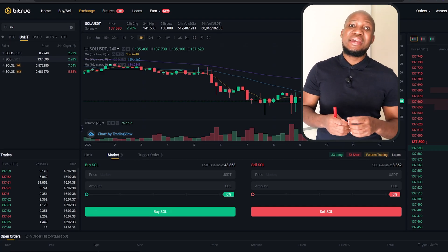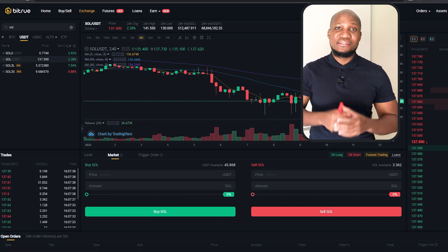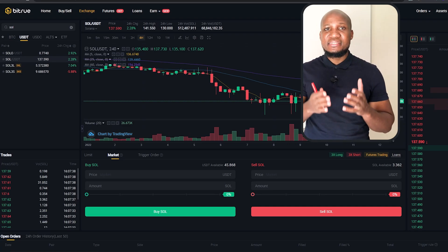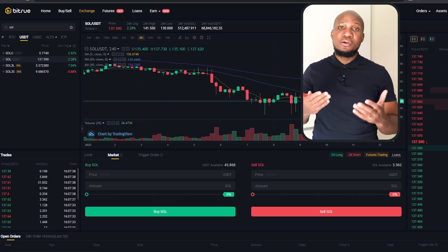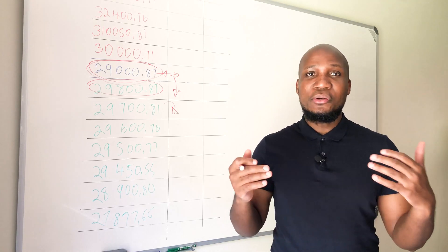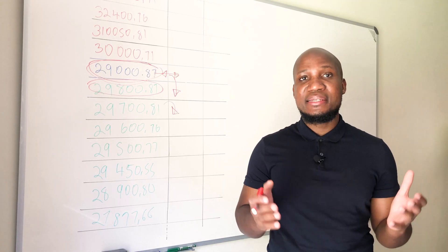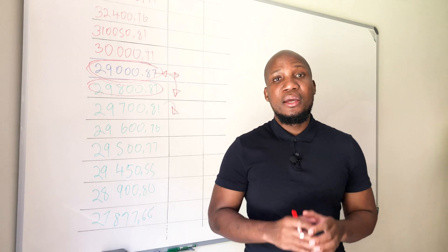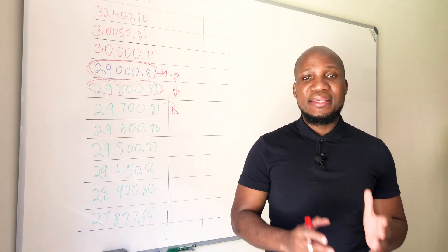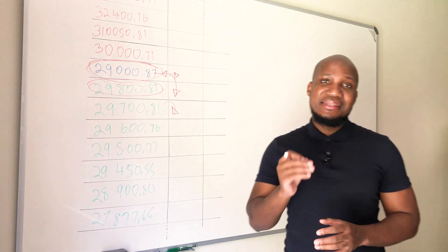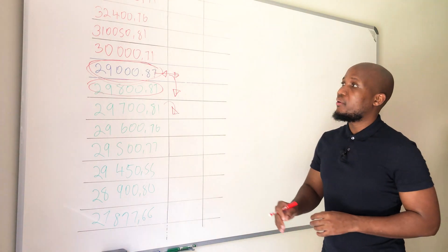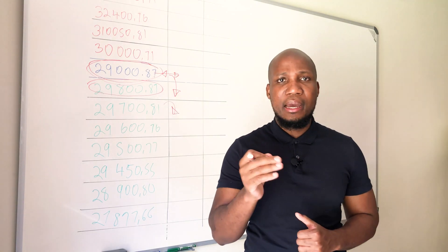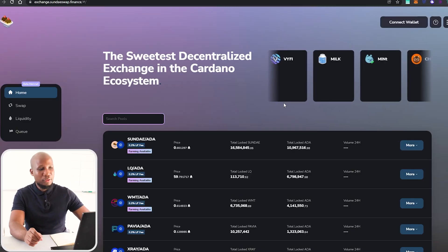Now that we know how slippage works on a centralized exchange like Bitru, let's move to the world of decentralized finance. Before we do, it's worth mentioning that decentralized exchanges like PancakeSwap, Uniswap, or SundaySwap work on something called an automated market maker, which doesn't necessarily rely on an order book. Let's jump into the computer to see how it works.